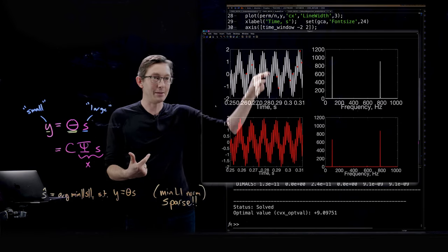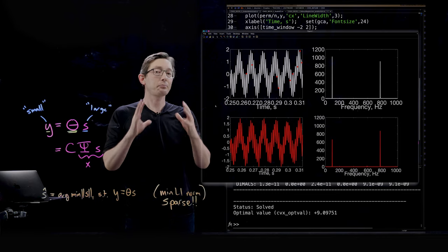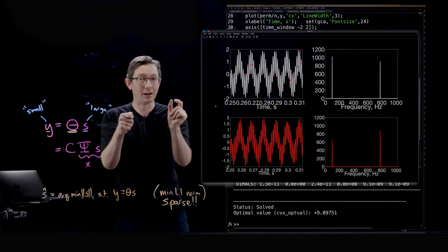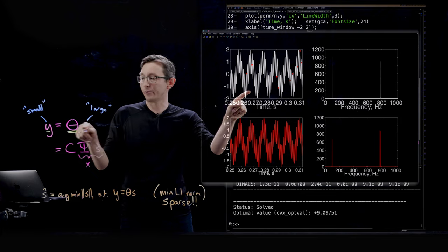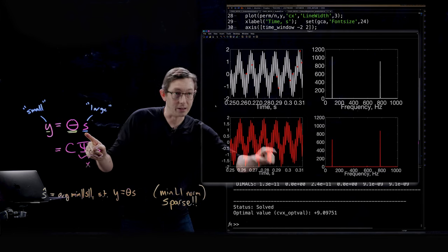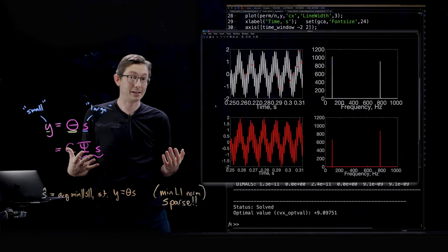And in a nutshell that's how compressed sensing works. You have these random measurements, these red measurements, many many fewer than you would traditionally need but because they're randomly spread out and you know exactly where they are at exactly what time you can solve this underdetermined system for a sparse vector S. That's our sparse power spectrum right there and then you can inverse Fourier transform and get the original signal X.